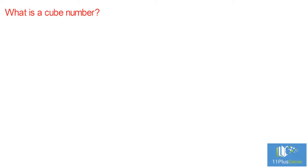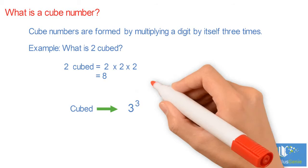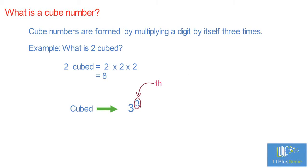What is a cube number? Cube numbers are formed by multiplying a digit by itself 3 times. For example, what is 2 cubed? 2 cubed is 2 times 2 times 2, which equals 8. Cubed is often written as a little 3 like this. The little 3 means the number appears 3 times in multiplying.